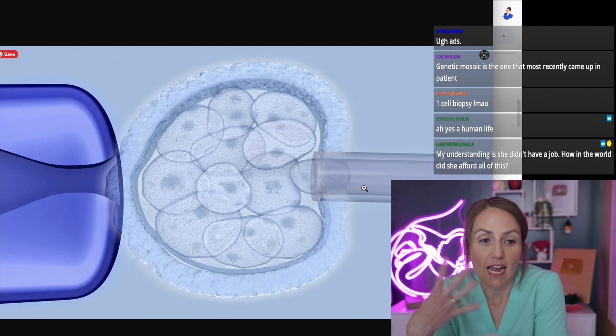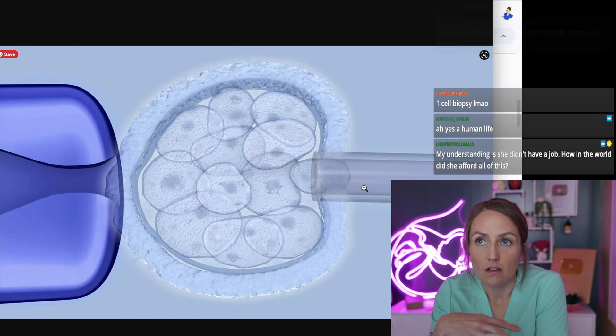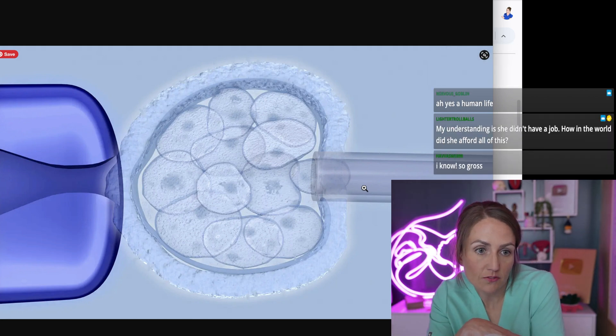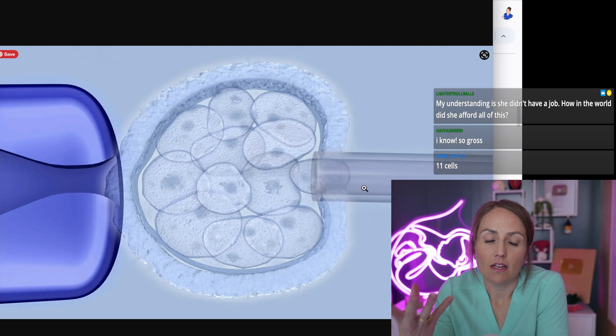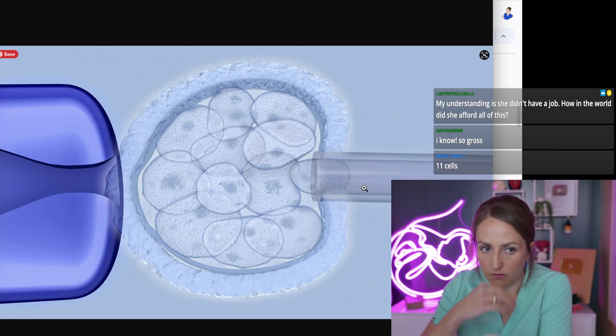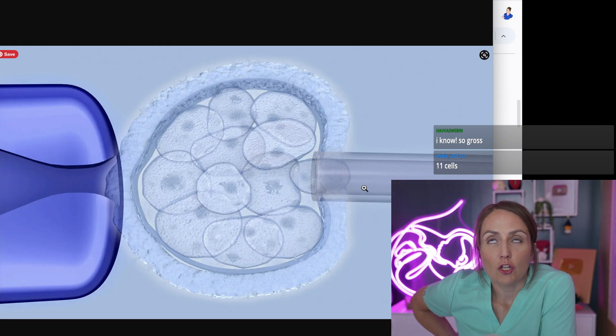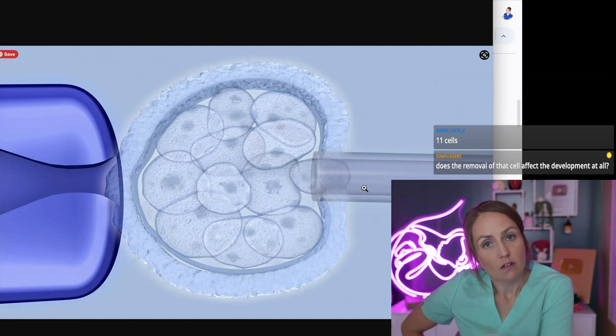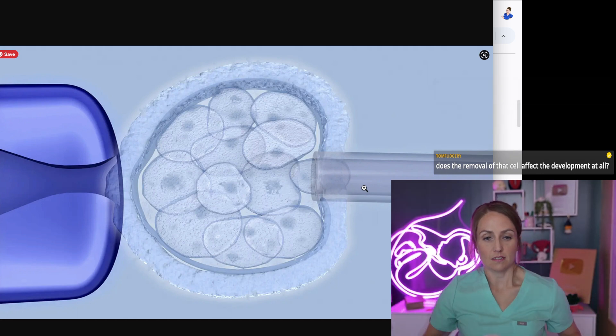And not only can you tell if there is a microarray for any kind of genetic abnormalities, or if it might be a carrier or something, yeah, someone's talking about fragile X, that's another one you could test for. Then you can also see the X and Y chromosome makeup. So then you could transfer only XX or only XY if you were doing sex selection.